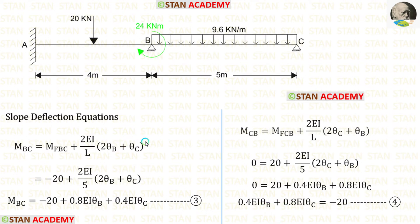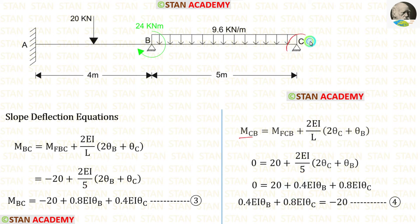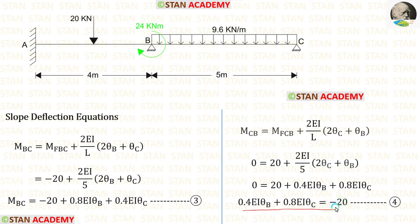Now let us make the slope deflection equations for span BC. In the equations, let us first apply the fixed end moments. Length of BC is 5 meters. Point C is a simply supported end, so there will be no moment — M_CB is 0. Taking 20 to the left side, it will come as negative. This is our first equilibrium equation. In span BC, we have made two equations.